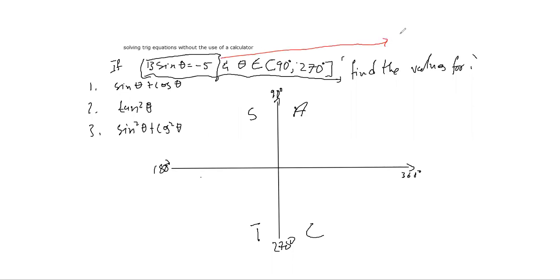Sine theta equals minus 5 over 13. We know that sine is Y over R and the hypotenuse is never negative, so it is Y that has to be negative. That gives us a clue - Y is negative in the second and fourth quadrants.